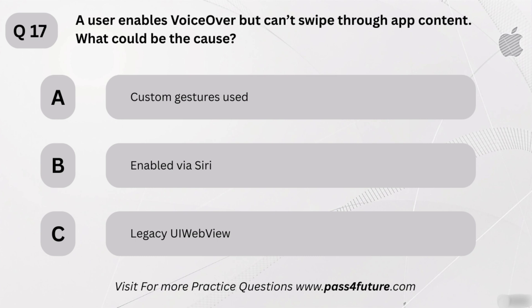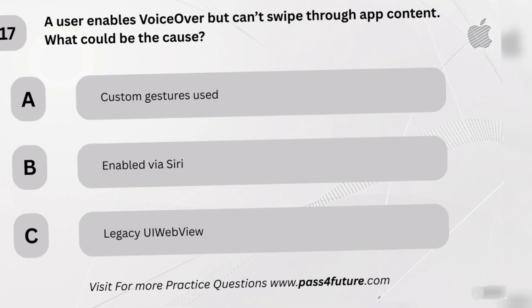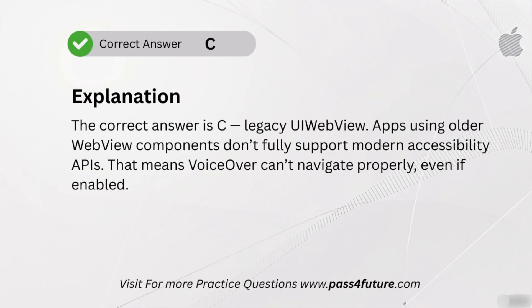A user enables VoiceOver, but can't swipe through app content. What could be the cause? A. Custom gestures used. B. Enabled via Siri. C. Legacy UI WebView. The correct answer is C — legacy UI WebView. Apps using older WebView components don't fully support modern accessibility APIs. That means VoiceOver can't navigate properly, even if enabled.